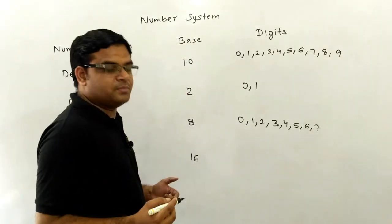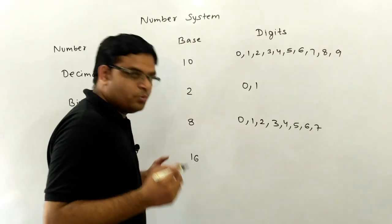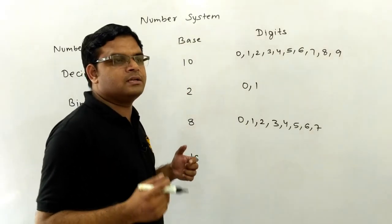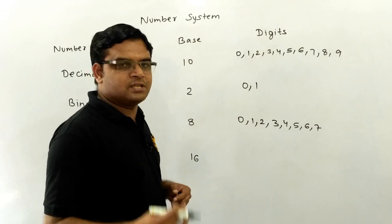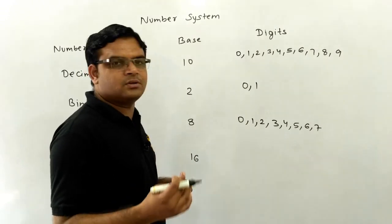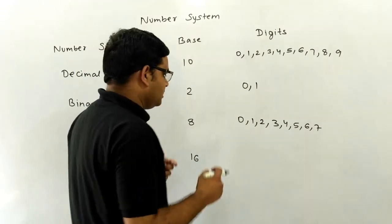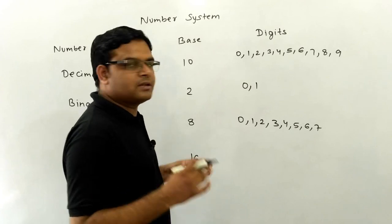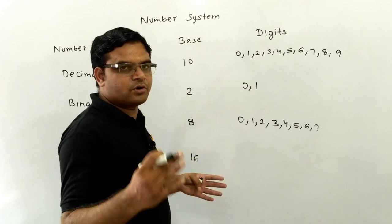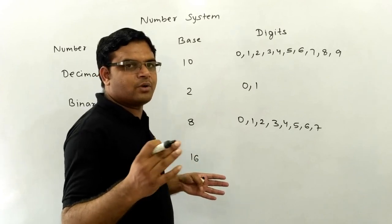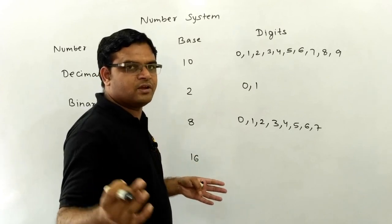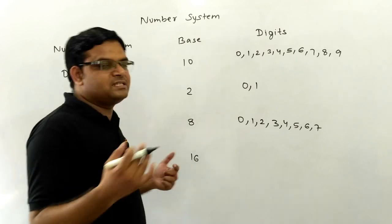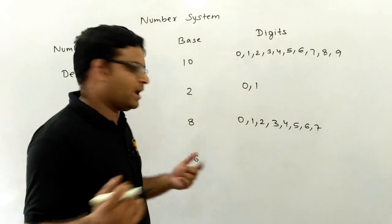In hexadecimal, it has 16 digits. From 0 to 9, and to represent 10, 11, 12, 13, 14, and 15, we use the letters A, B, C, D, E, and F.